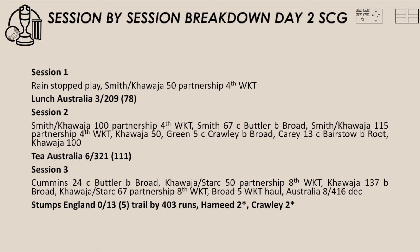Just before stumps Australia had a crack at England with the ball. Mitchell Starc nicked off Crawley for a duck but apparently bowled a no-ball and Zach Crawley was recalled to the crease. Starc not keeping his foot behind the line, but overall that little spell just before stumps was pretty good from Australia. Starc and Cummins made Hameed and Crawley play and were making them uncomfortable at the crease. Australia would have been disappointed Starc bowled that no-ball, but overall it was a pretty good day for Australia.